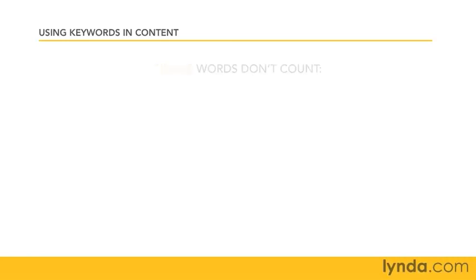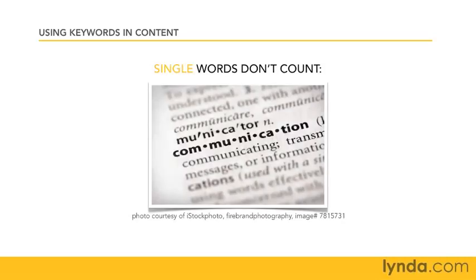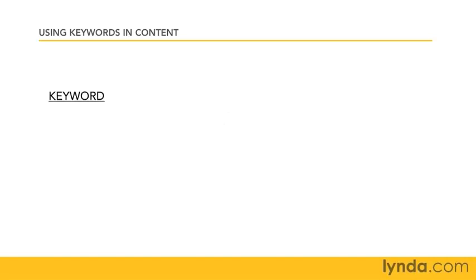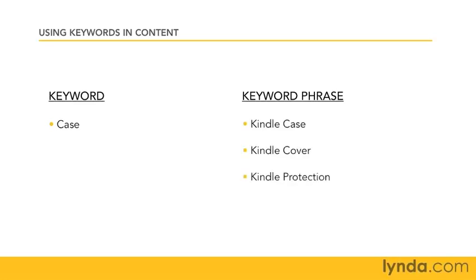Also remember that single keywords aren't what you're optimizing for, so when you find them in your existing content — and you will if you go back and look — change them into keyword phrases instead. For instance, if the single word 'case' is within the content for our Kindle site, we review our keyword research and find phrases that mean the same thing. A case for the Kindle could also be called a 'Kindle case,' a 'Kindle cover,' or even 'Kindle protection.' Go back to the website, find instances of 'case,' and use these keyword phrases instead.